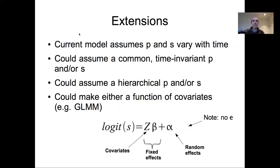This framework is also relatively easy to extend. For example, the current model is assuming that our capture probability and survival probability are varying with time. That could either be assumed to be a common time-invariant set of parameters for capture probability or survival, which is honestly the easiest place to start is to assume those parameters are constant. You could also assume that they are hierarchical, so you might have a random effect on either your capture probability or your survival probability, and then you might move from having a random effect to attempting to write down fixed effects that would try to explain the variability that we see in the survival probability or the capture probability.